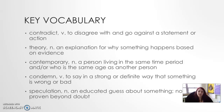Some key vocabulary: contradict — to disagree with and go against a statement or action. A theory is an explanation of why something happens based on evidence. Contemporary is a person living in the same time period and or who is the same age as another person. Condemn is to say in a strong or definite way that something is wrong or bad. And speculation — an educated guess about something not proven beyond doubt.